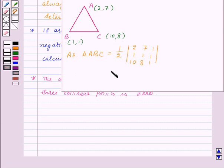So this will be equal to one-half times 2 times (1 times 1 minus 8 times 1). Here we are expanding the determinant along R1.